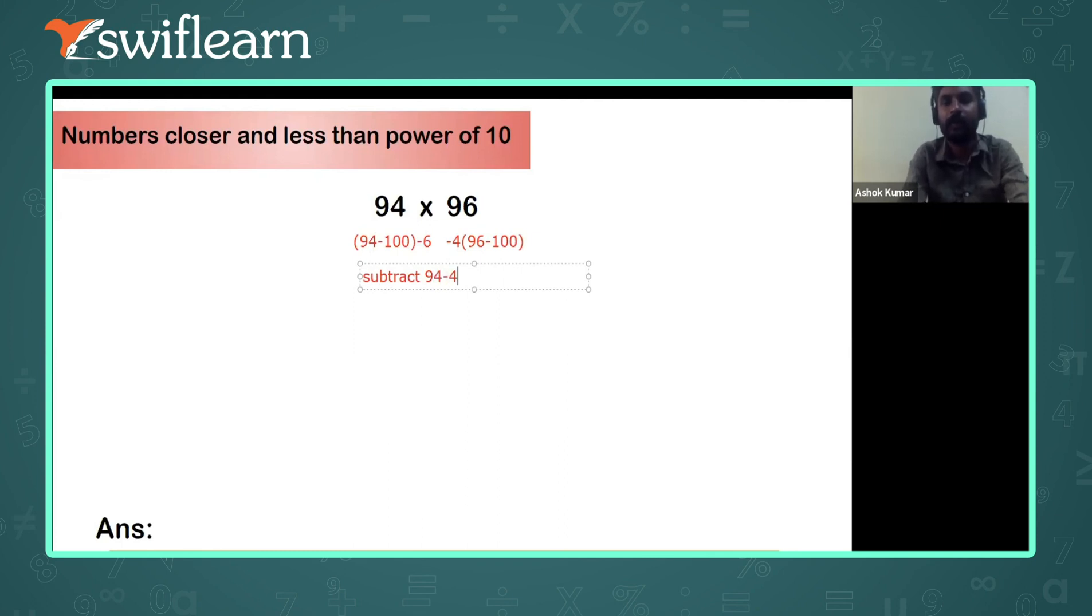So that will be equal to how much? 90. That will be the first part of the answer. The second part of the answer is you have to multiply the unit digit number. What is the multiplication of unit digit numbers, or the answers you have got here?